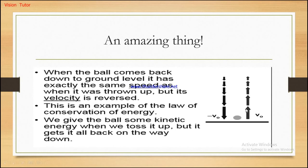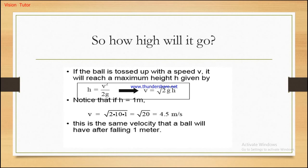One important thing to know: the initial velocity going up and the final velocity coming down are the same in magnitude but opposite in direction. When the object returns to the same height level, the speed is the same but the velocity is different because velocity is a vector quantity — they have different directions.